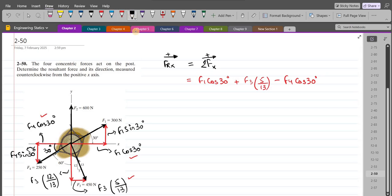If we substitute the values, we have FRx equals F1, which is 300 cos 30 degrees, plus F3, which is 450 Newtons, so 450 times the ratio of 5 upon 13.